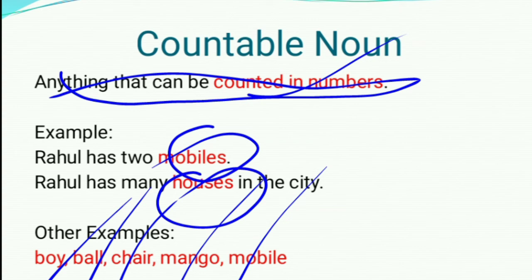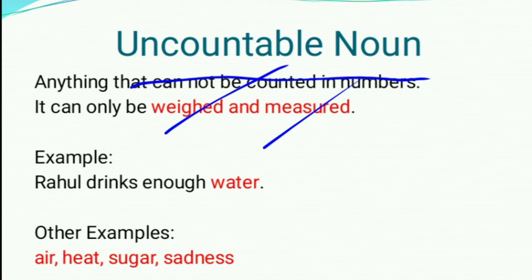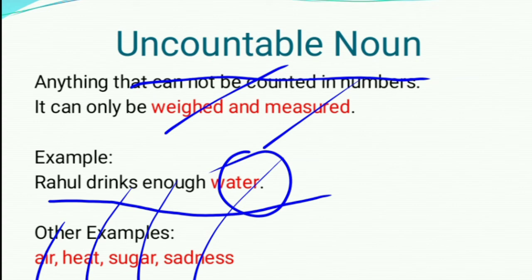Now, uncountable noun. What we understand by uncountable noun? Anything that cannot be counted in numbers — it can only be weighed and measured — that is uncountable noun. For example, Rahul drinks enough water. Here the word in red color, water, is a noun. Other examples: air, heat, sugar and sadness — they all are uncountable nouns.